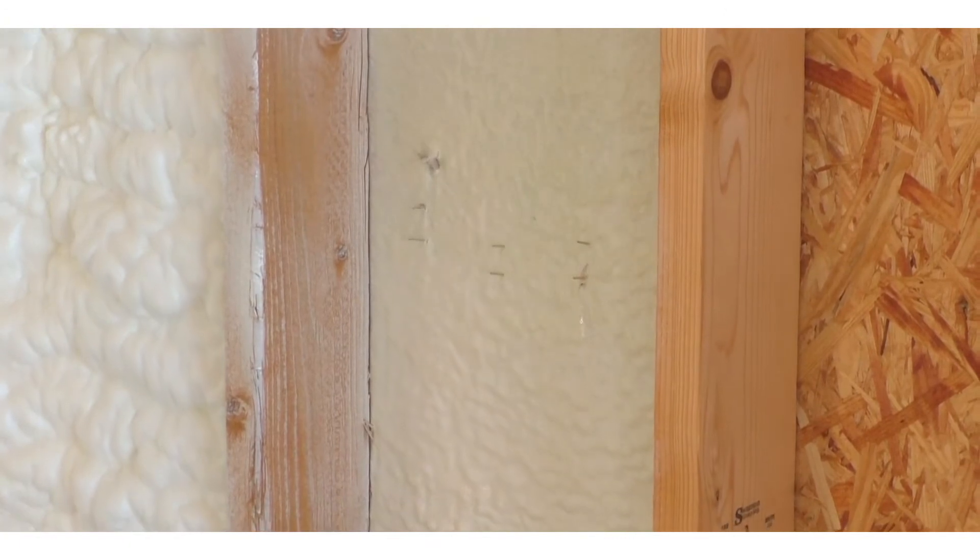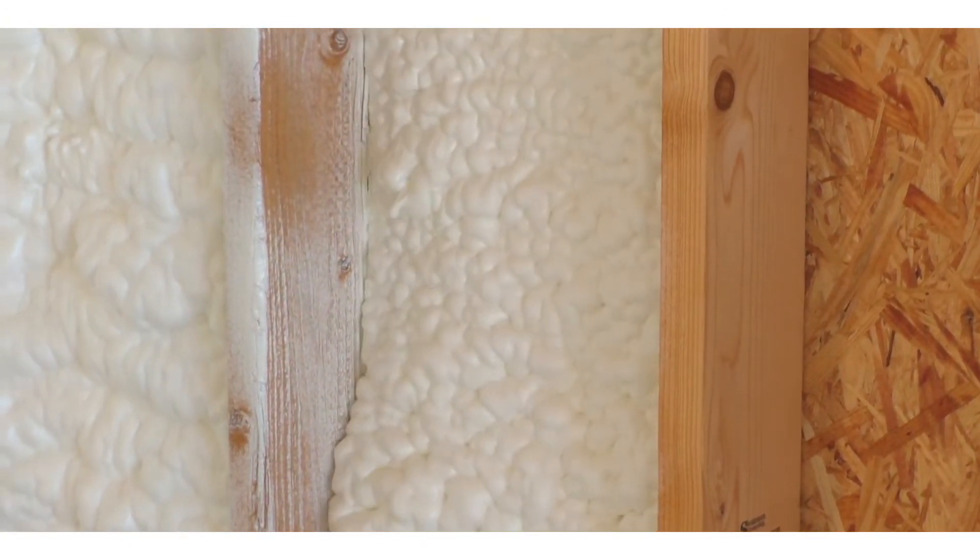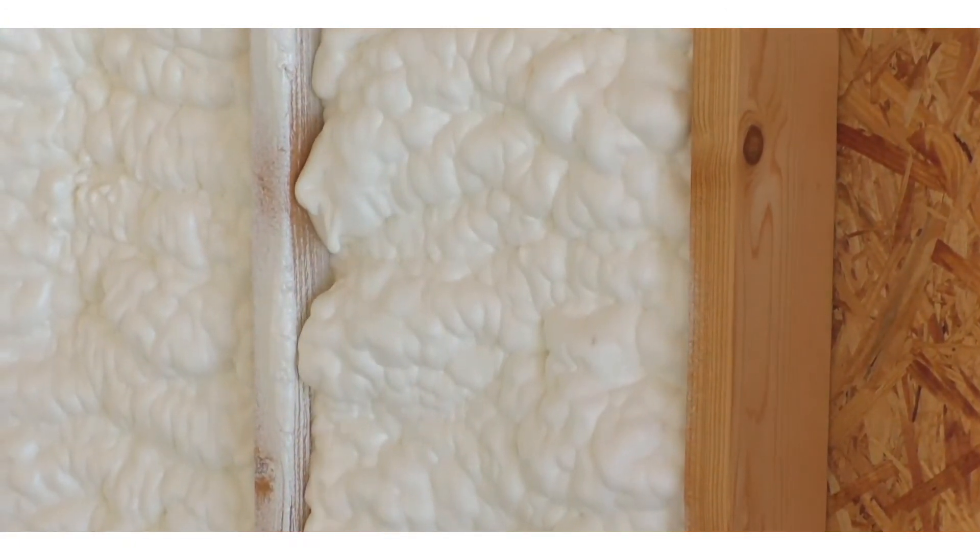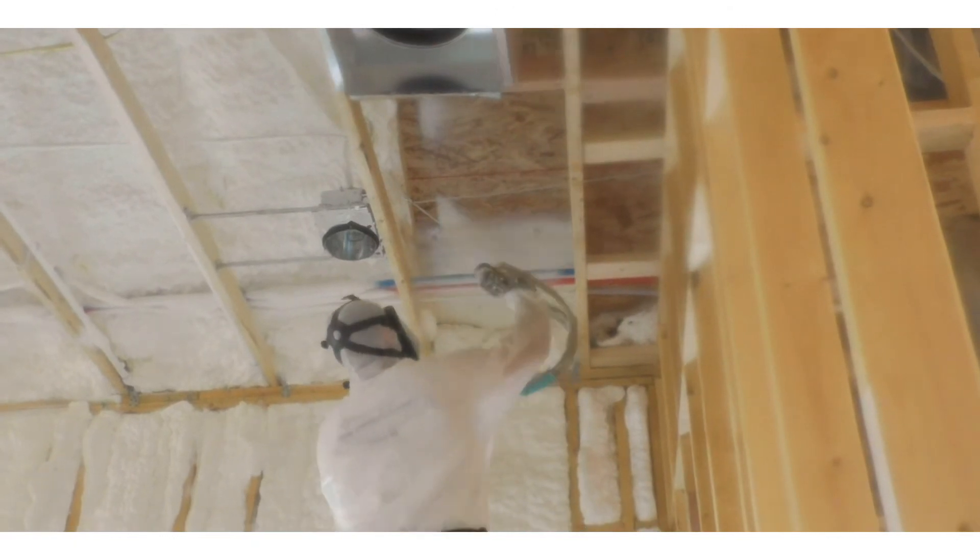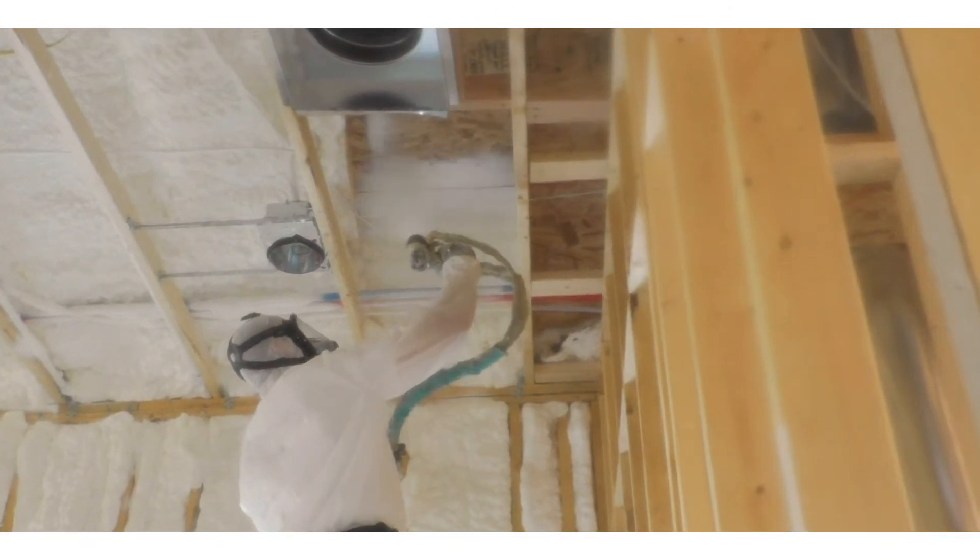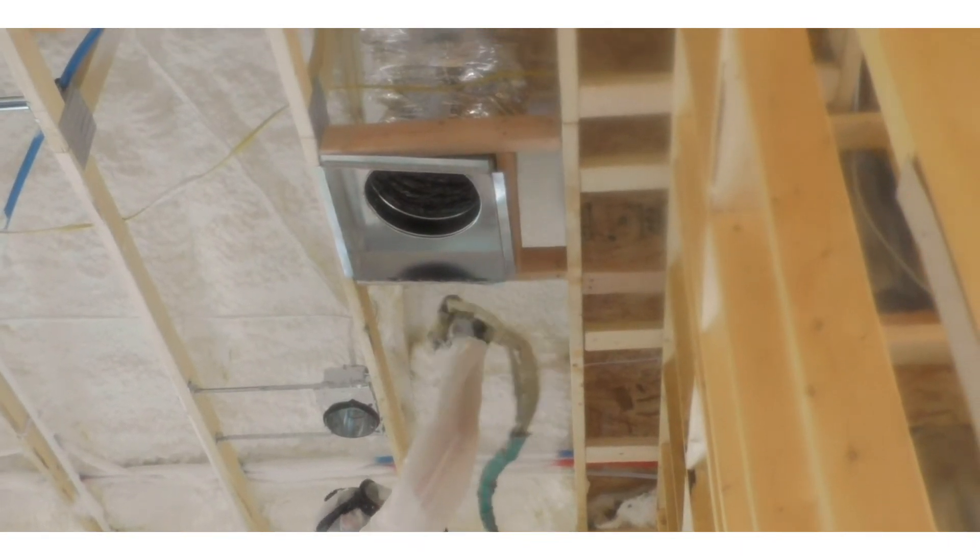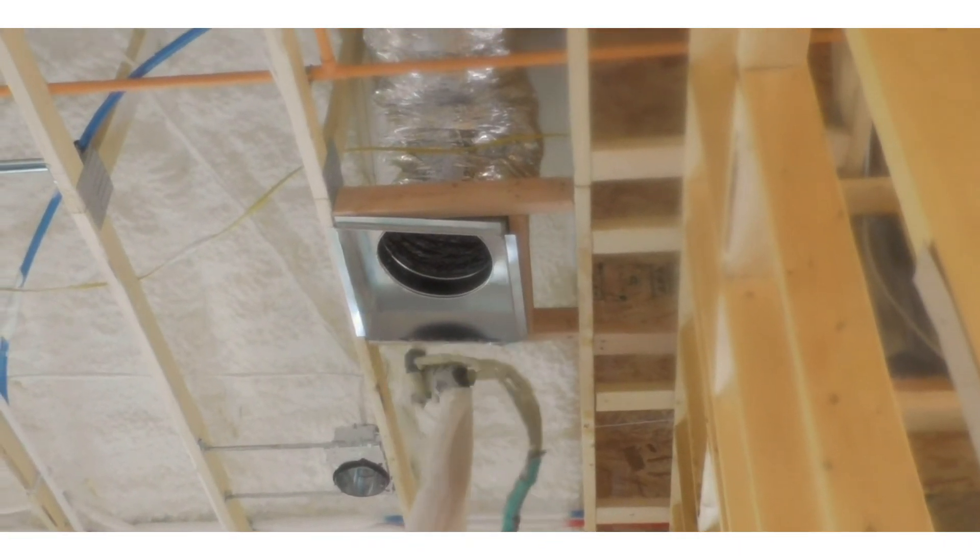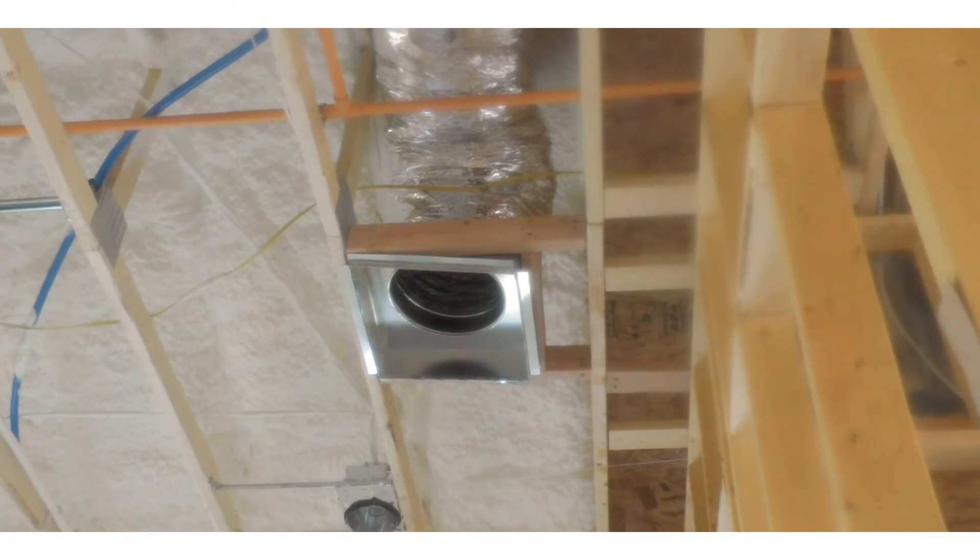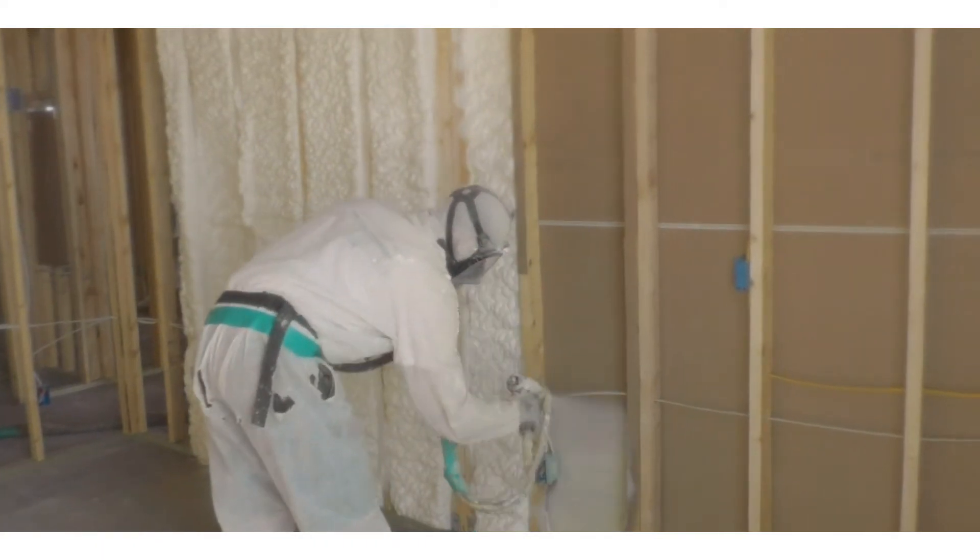Over the years the insulation industry has changed drastically in what types of materials are used and what those materials can do, but the way an insulation material's effectiveness is measured has remained the same using only R-value. This has caused many to believe that R-value is the only thing that matters when choosing an insulation material for your building or home.